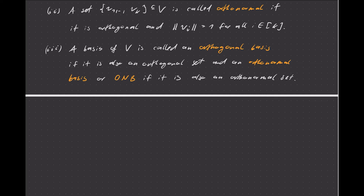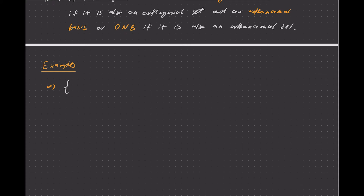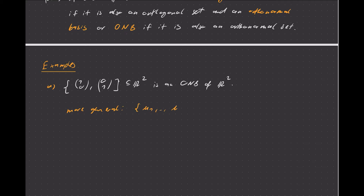Let's have a look at a few examples of such bases. There's one easy example that you all know and love, and that is the canonical basis. For example in R², the basis {(1,0), (0,1)} — these vectors obviously have length 1 and they are orthogonal to each other, so this is an orthonormal basis of R². More generally, the set u1 to un, known as the canonical basis, is an ONB of Rⁿ.